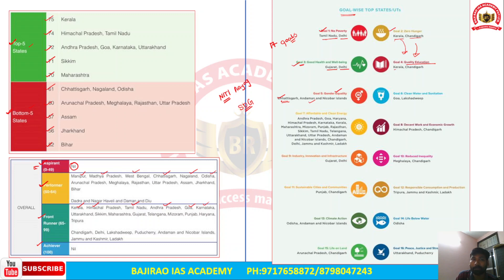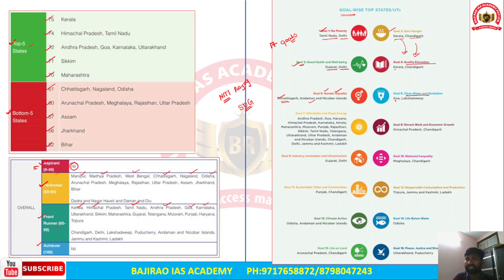It is notable that Chhattisgarh, despite being considered backward in terms of infrastructure and socioeconomic development, has been making significant gains in achieving SDGs, including gender equality. This demonstrates that states can perform well on specific SDG goals even while facing broader development challenges.